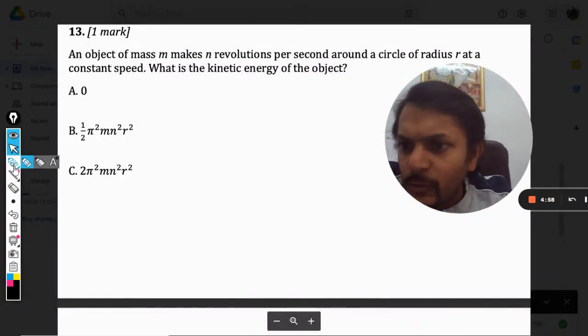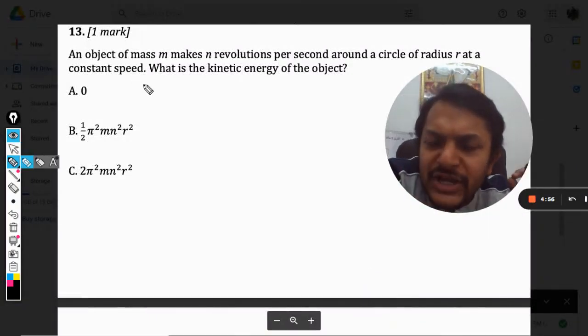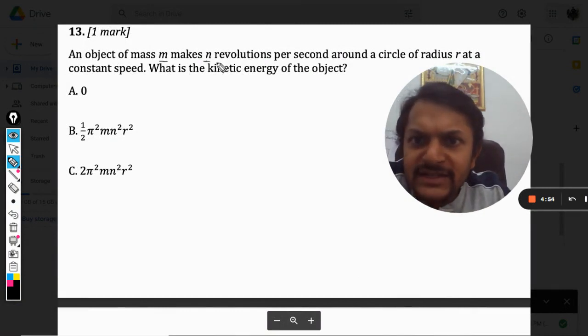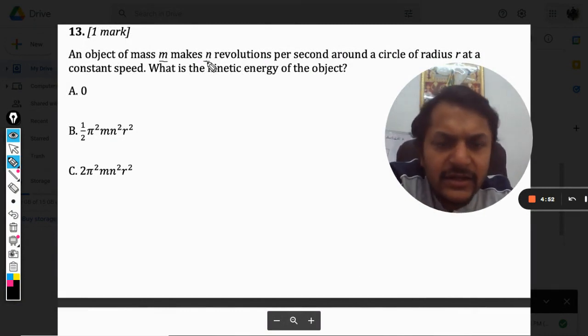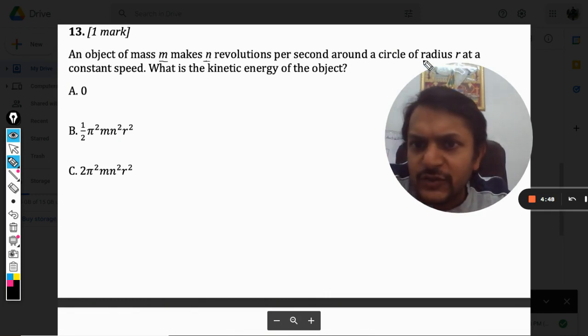Okay dear students, let us see what is there in this question. An object of mass m makes n revolutions per second around a circle of radius r at a constant speed. What is the kinetic energy of the object?